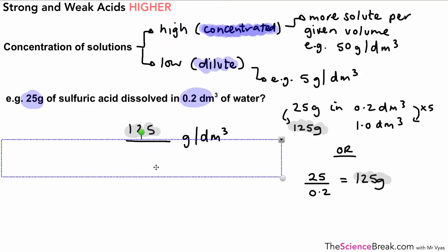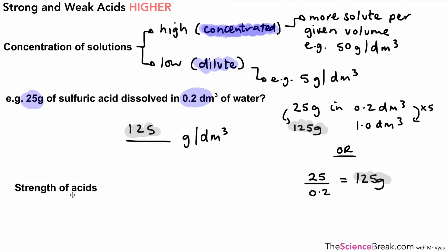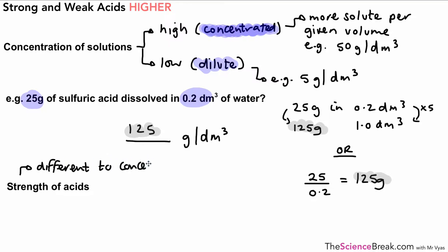Now, when we're looking at acids, we often talk not only in terms of concentration, but we also talk in terms of strength of acids as well. So if we have a strong acid, this is different to having a concentrated acid. Strength and concentration of acids are two different things, and we're going to see exactly why that is in a moment.